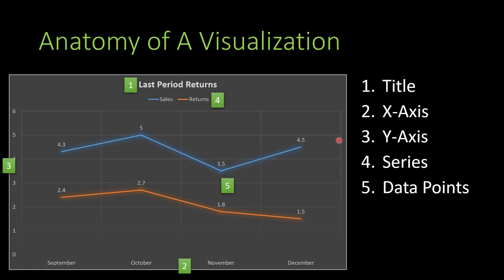What makes up the series are the individual data points, labeled 4.5, 3.5, 1.8, etc. It's generally a good idea to label your data points so that you're not guessing what the data is when you're looking at the axis. If the axis shows 3, 4, 5, you know a point is somewhere between 4 and 5 — why not just label it as 4.3? That's pretty much the anatomy of any visualization.